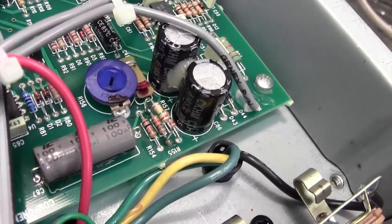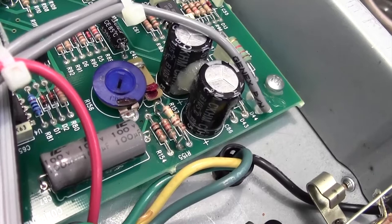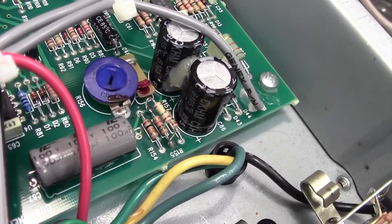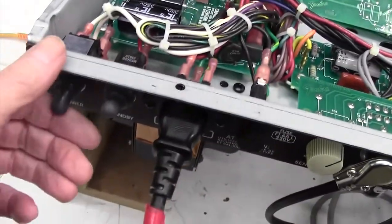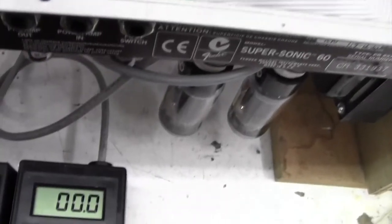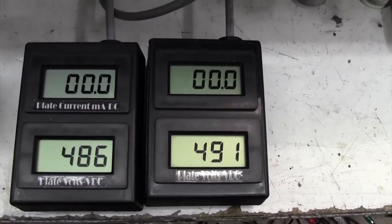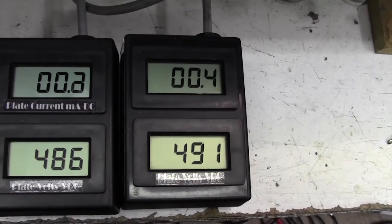I hope you can see there, I've soldered that 150k across the existing R155. All that now remains is to turn the amp on and see whether the bias current settles at about 40mA.